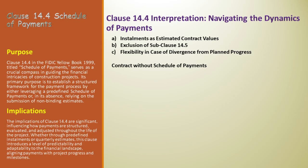Exclusion of Sub-Clause 14.5. Another intriguing aspect of Clause 14.4 is its explicit exclusion of Sub-Clause 14.5. Sub-Clause 14.5 covers plant and materials intended for the works. When a schedule of payments is active, the specific provisions of 14.5 don't apply. This delineation clarifies the financial framework within which the parties operate, ensuring there's no ambiguity about the applicability of various clauses depending on the payment structure in place.